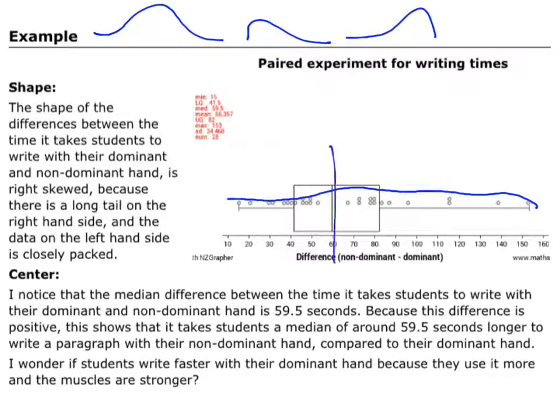And if I take where the median is, that middle line there, I can see the distance on the right hand side is much bigger than the distance on the left. So that tells me there's a longer tail on the right hand side. So that means my data is right skewed.